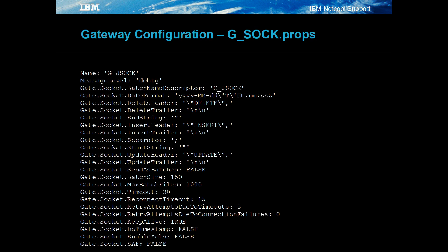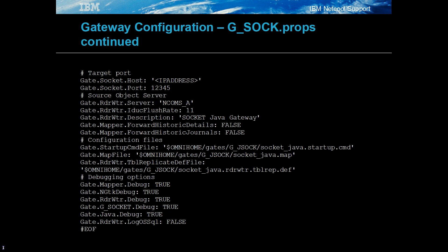The Socket Java Gateway is configured to send events from ncoms_A to the Socket Java Probe's port. The gateway's name, g_jsoc, needs to be added to the omni.dat file and is used to connect to the gateway using nco_sql if required. Events are given the headers insert, update and delete. The gateway's description property should be set to identify it within the object server's catalogue.connections table.